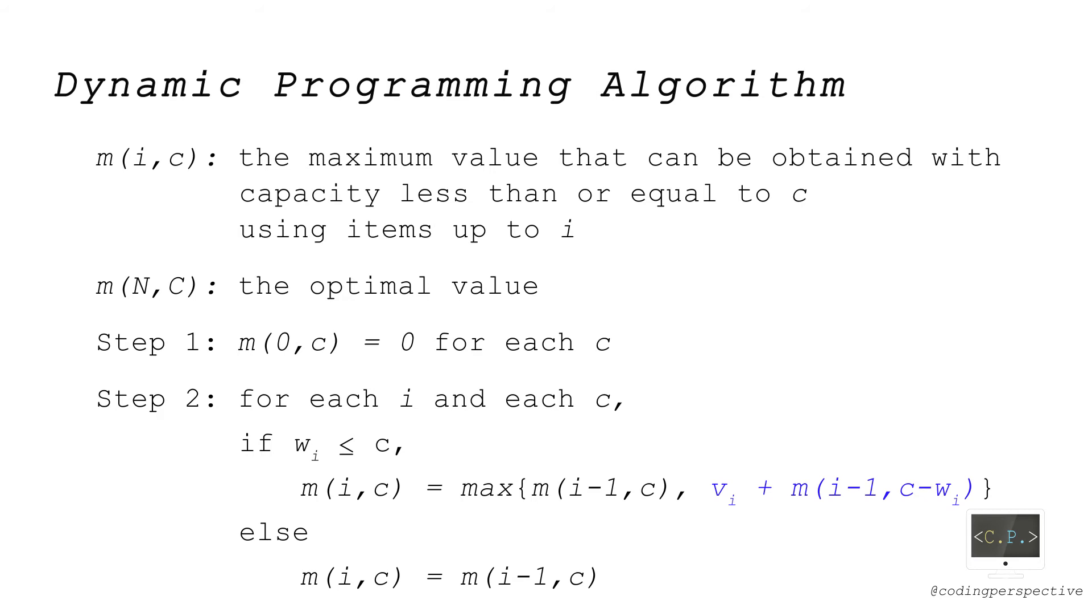Thus, we get v_i plus m(i-1, c-w_i) if we can include item i. Note that we can include item i only if w_i is less than or equal to c.